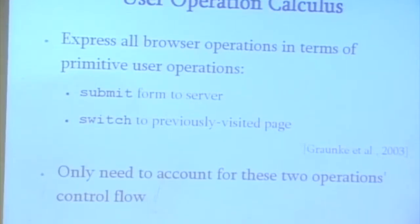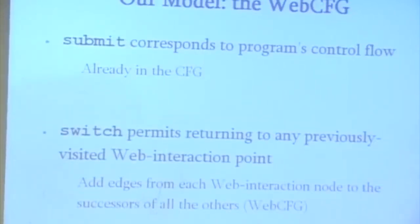We submit and switch. Submit is what you would expect. It's the thing that's already in the control flow graph. It says, go to the next point in the program source.